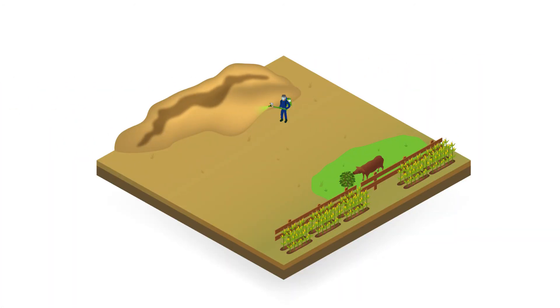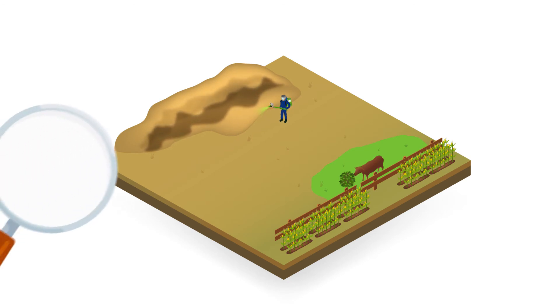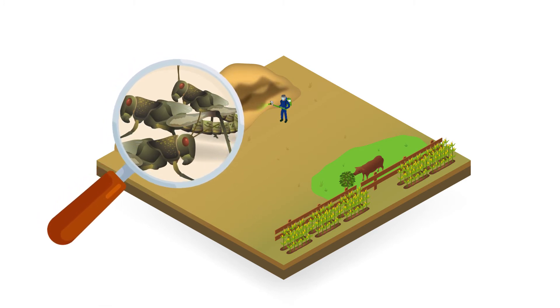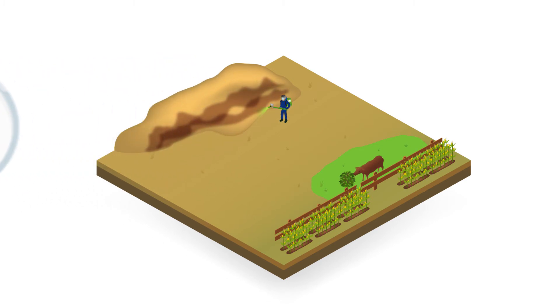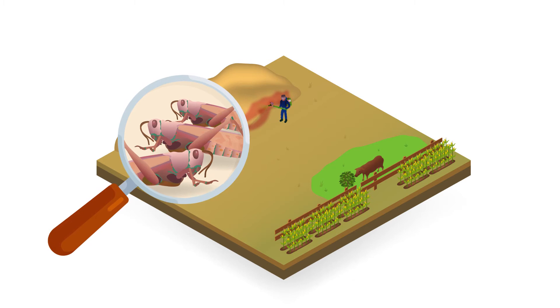Green Muscle is best used as a preventative control method and should be applied to juveniles, also known as hopper bands. This allows Green Muscle to control the locusts and grasshoppers before they become flying adults which cause the most damage to crops.